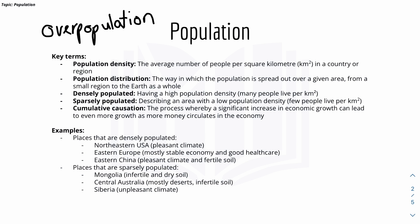Here are some examples of places that are densely and sparsely populated. Densely populated areas include the Northeastern USA, because there's a pleasant climate, as well as Eastern Europe and Eastern China. Sparsely populated examples include Mongolia, Central Australia, and Siberia. You can see a pattern: densely populated areas tend to have good climate, good healthcare, and a good economy, while sparsely populated areas have infertile soil or an unpleasant climate.